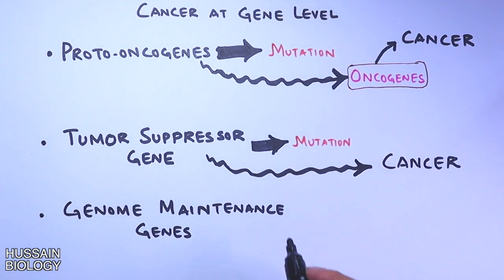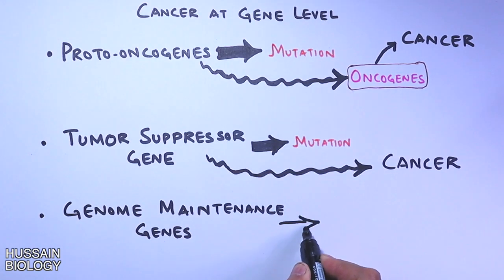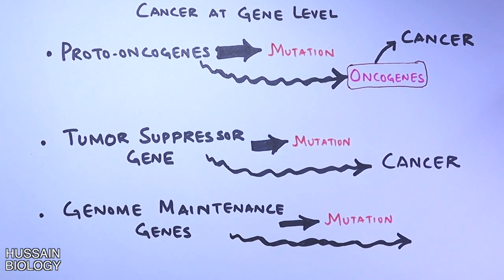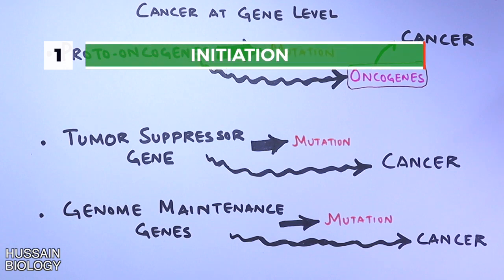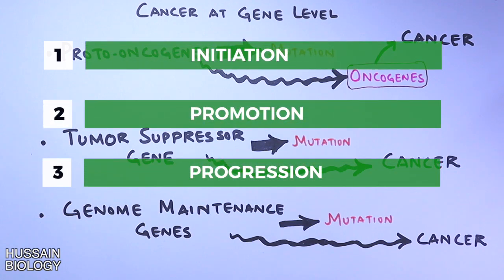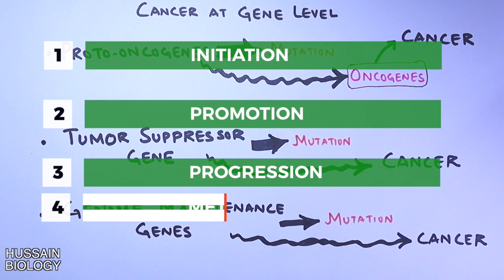The third type is genome maintenance genes, which maintain the integrity of the genome from errors — for example, DNA repair genes. These genes, once mutated, also contribute to cancer. Cancer also progresses through ordered steps: first initiation, followed by promotion, then progression, and if the tumor mass mobilizes, that is called metastasis.